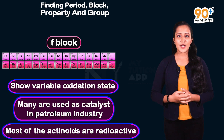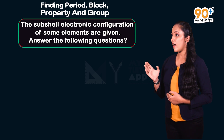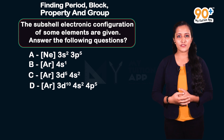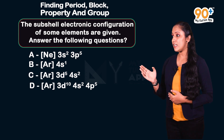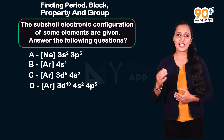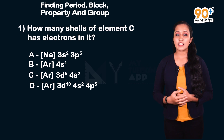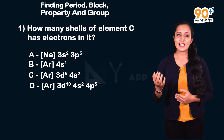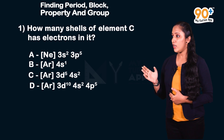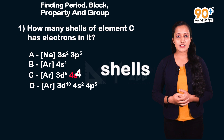Now we discuss a pattern question from previous years. Subshell electronic configurations of four elements are given, using neon and argon as preceding inert gases. First question: How many shells of element C have electrons in it? From element C's configuration, the 4s subshell has 2 electrons, so the answer is 4 shells.